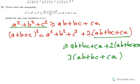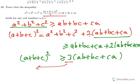So we get that three times ab plus bc plus ca is less than or equal to a plus b plus c perfect square. If we divide by three, we get the right side of this inequality.